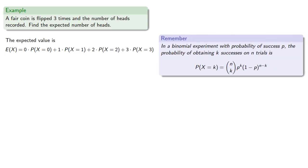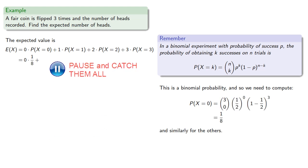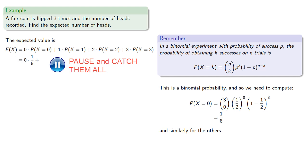But these are binomial probabilities, and so we need to compute. For example, the probability that we get zero heads will be... And similarly for the others. And so the sum of the products of the outcomes with their probabilities will be...